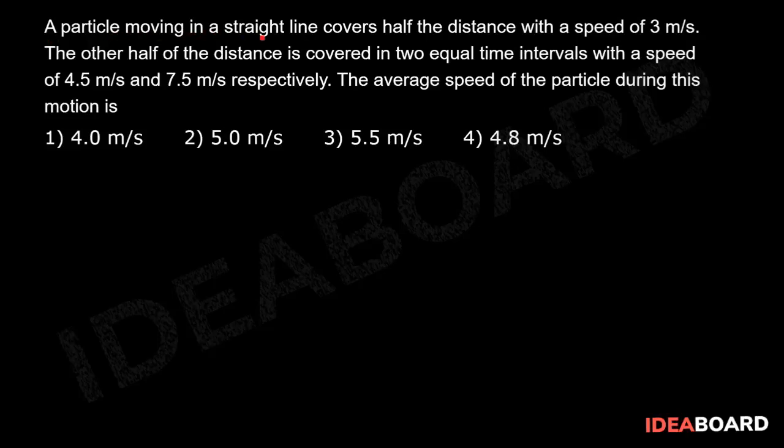A particle moving in a straight line covers half the distance with a speed of 3 meters per second. The other half the distance is covered in two equal time intervals with a speed of 4.5 meter per second and 7.5 meter per second respectively. The average speed of the particle during this motion is: